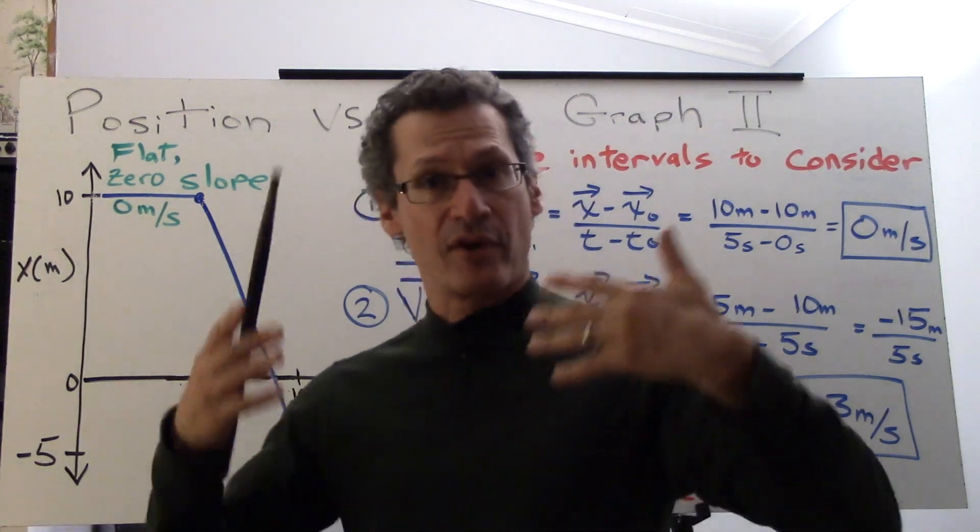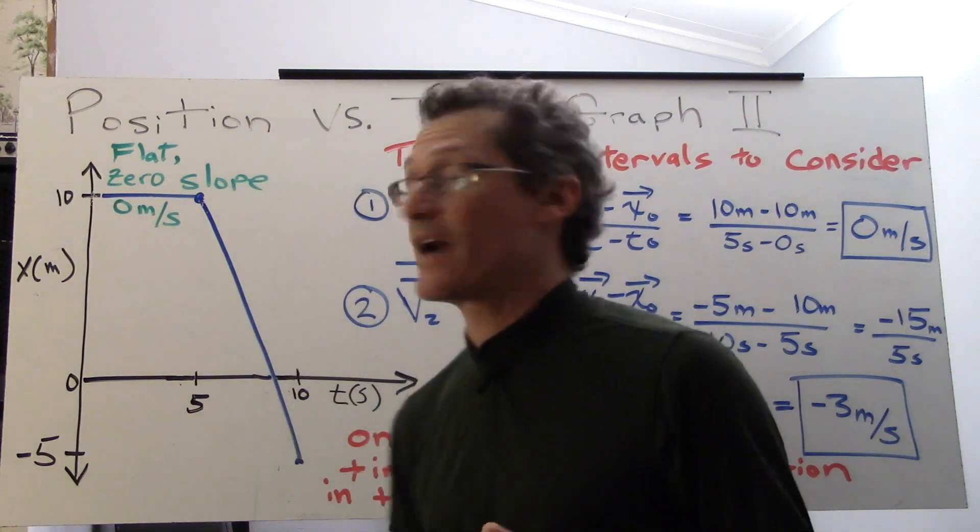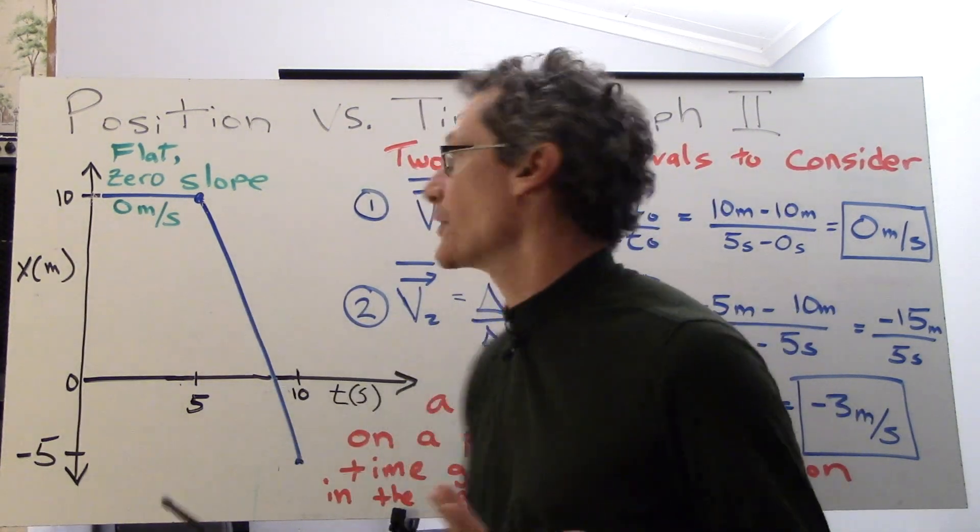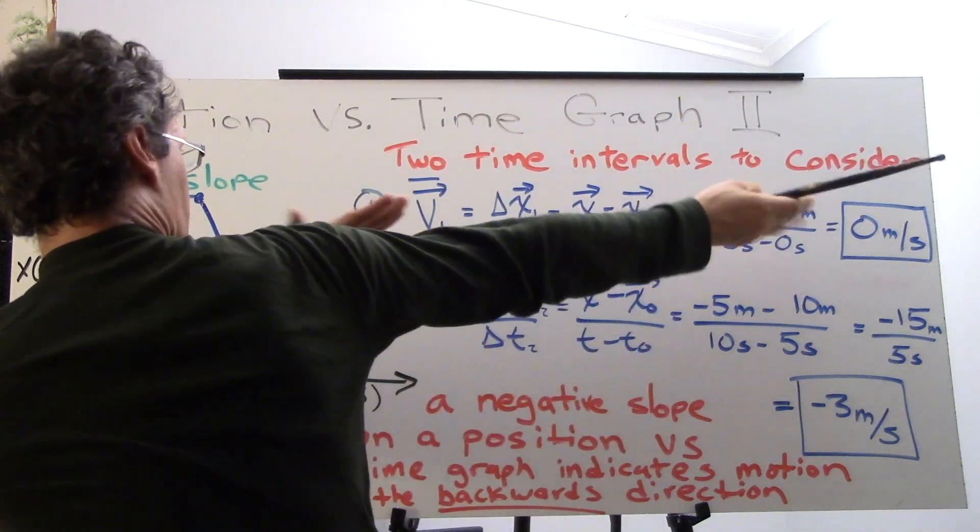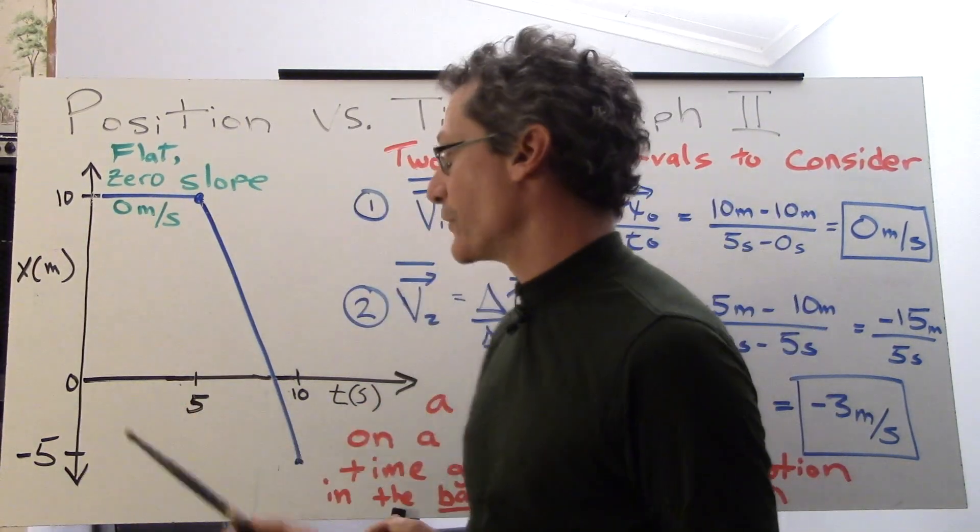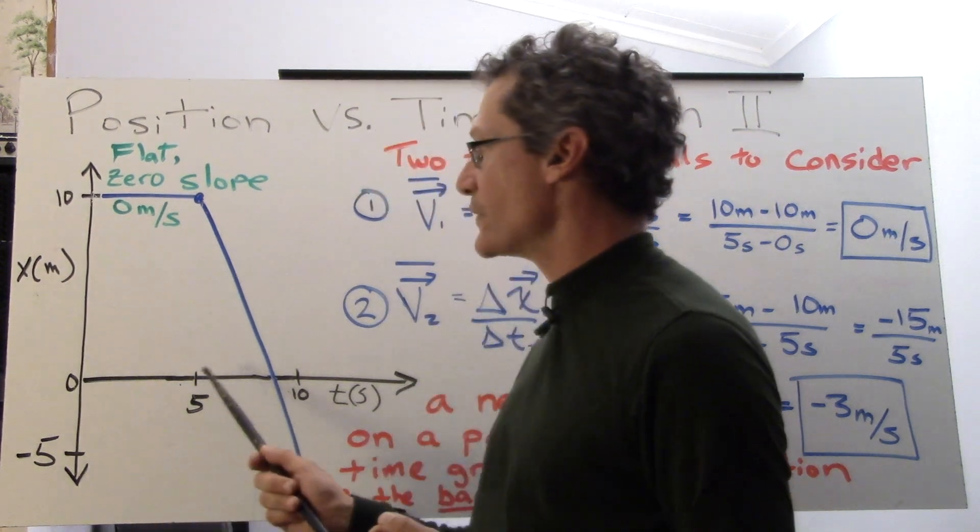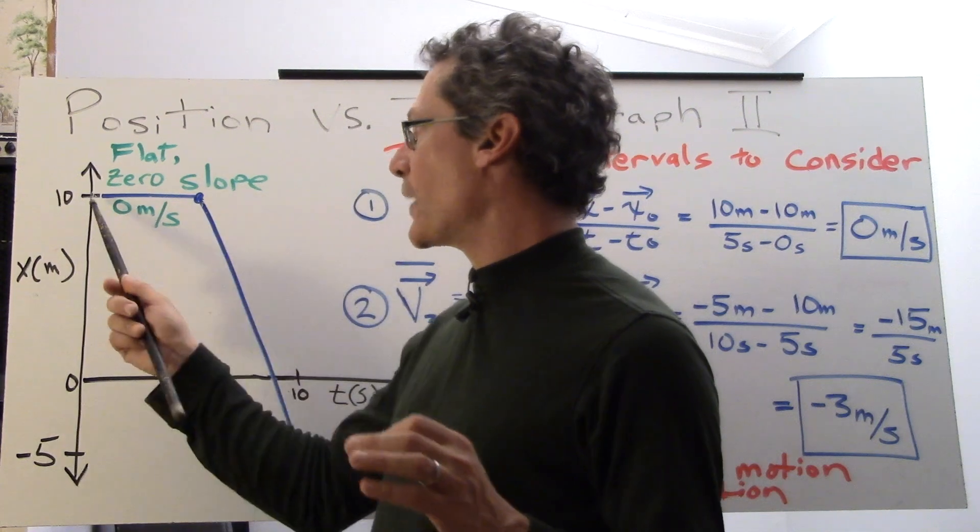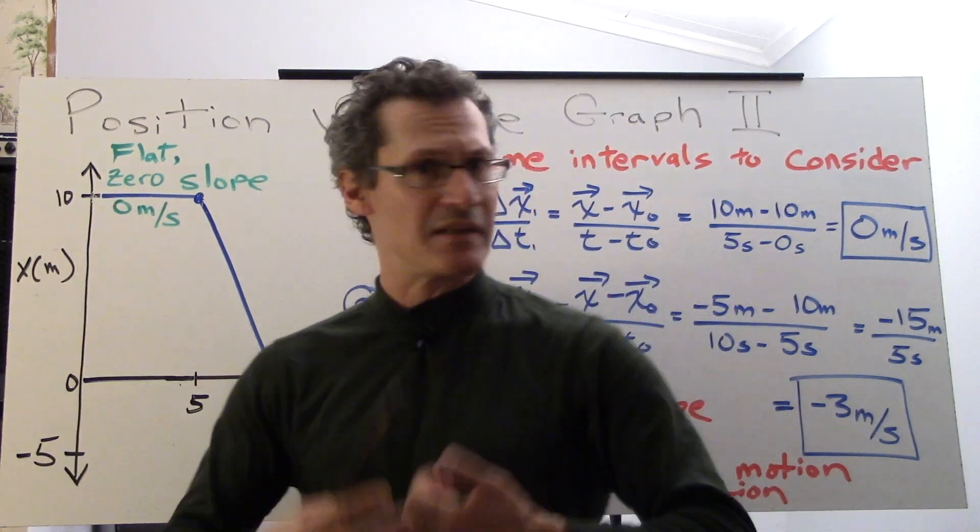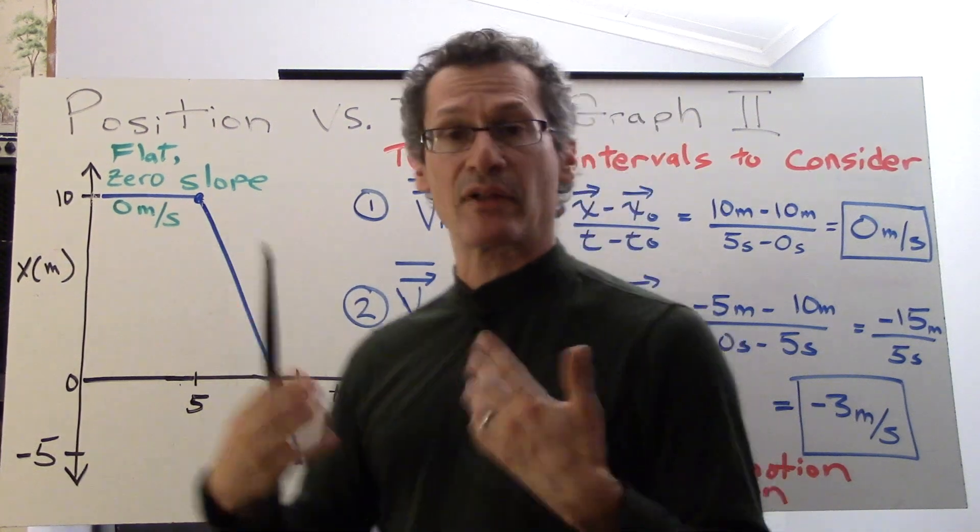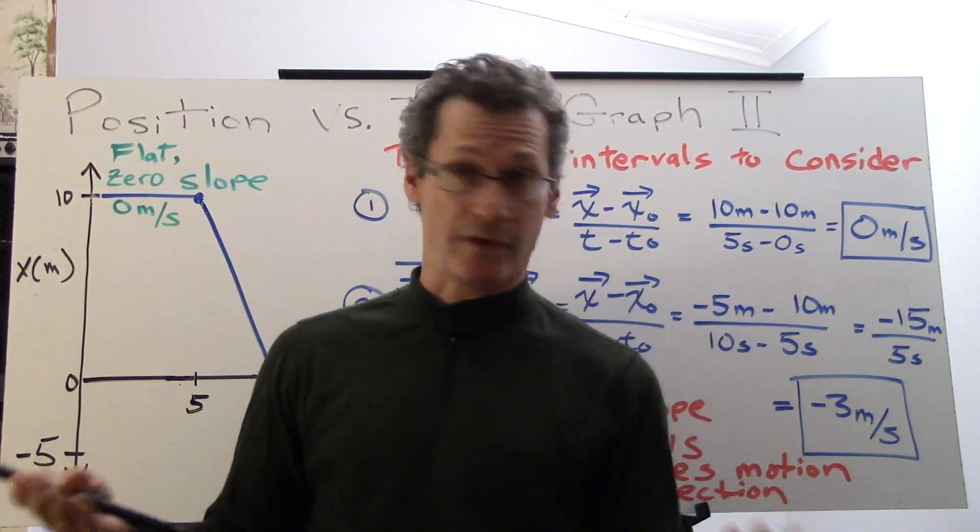And so with the second position versus time graph here we have a slight difference in that we have two phases of motion to consider. There are two time intervals to consider and one is this flat piece over here from zero to five seconds where the position remains at 10 meters throughout. It's constant. The position's constant meaning that there's no motion. And so we can see that a flat slope represents a velocity of zero, not moving.